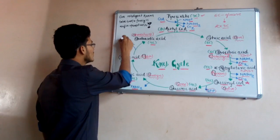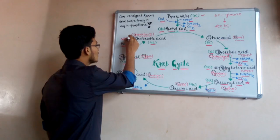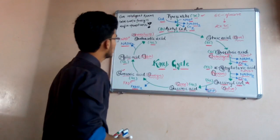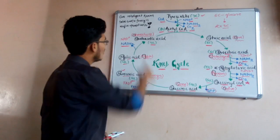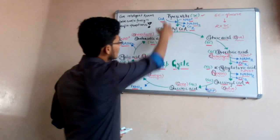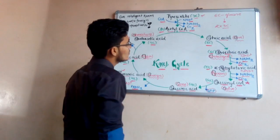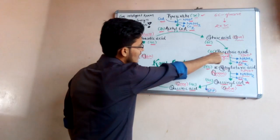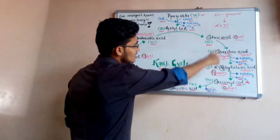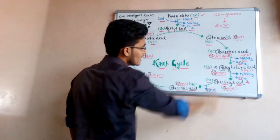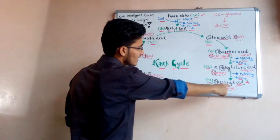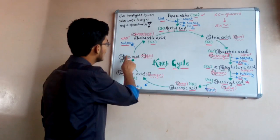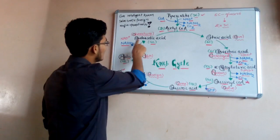A molecule of NADH2 is formed by utilizing NAD positive again. So the cycle goes: oxaloacetic acid combines with Acetyl Coenzyme A to form citric acid, which converts into isocitric acid, then ketoglutaric acid, succinyl Coenzyme A, succinic acid, fumaric acid, malic acid, and then oxaloacetic acid again, and the cycle repeats.